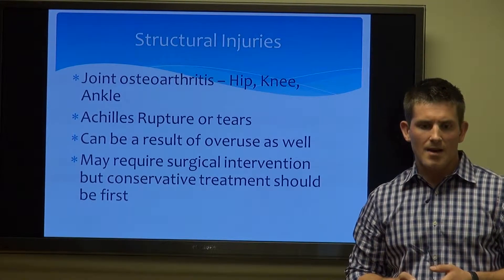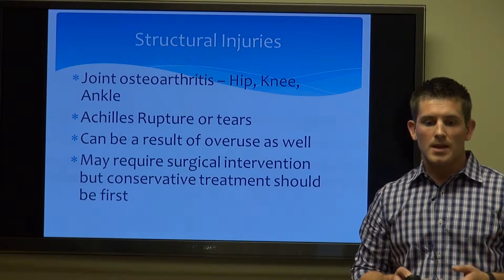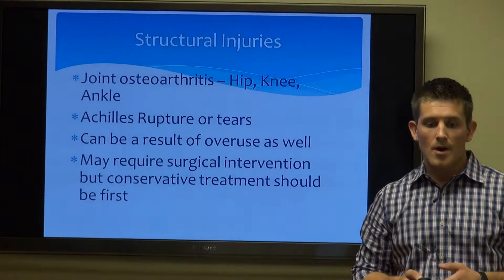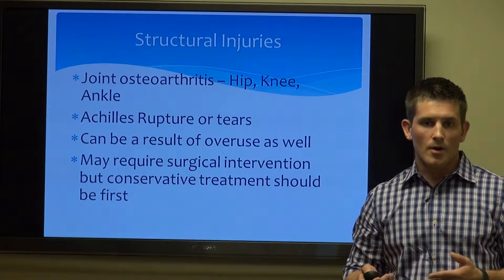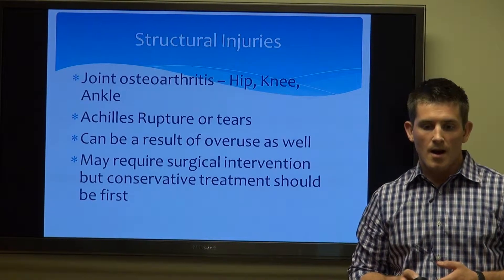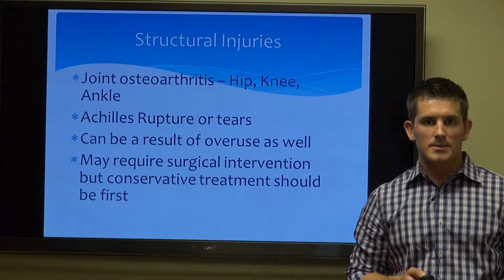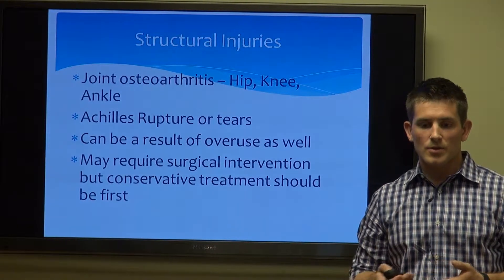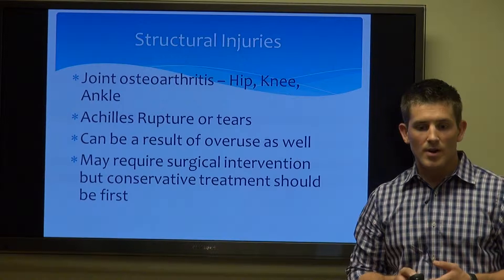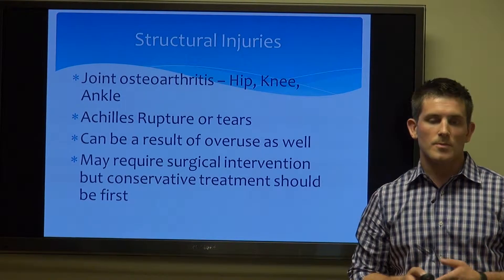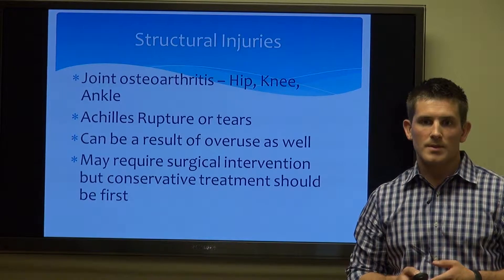Some other structural injuries: we can have osteoarthritis in some of the major weight-bearing joints — the hip, the knee, and the ankle are the most common. Also we can have Achilles rupture, tears, or other accumulated micro-trauma. A lot of these injuries could be structural — happening in one specific incident — or they can be a result of overuse conditions. Some may require surgical intervention, but conservative treatment should always be considered first, especially when it comes to some of the major joints.